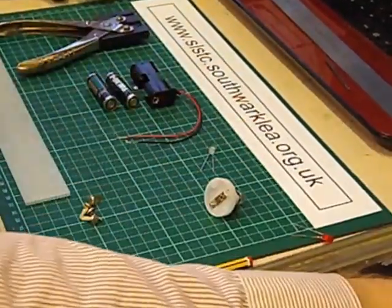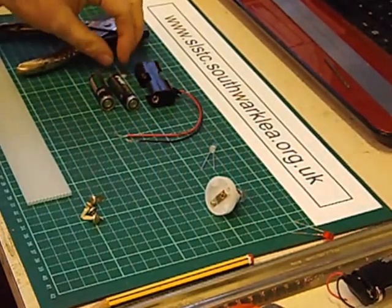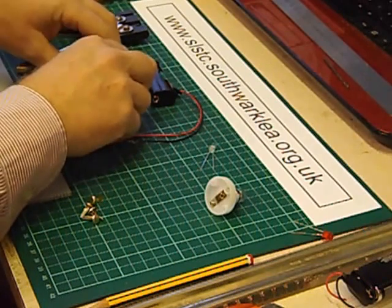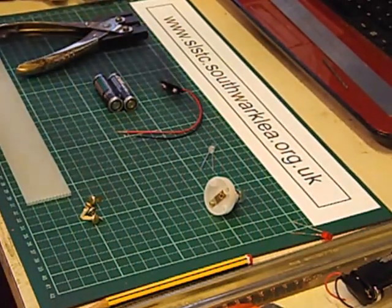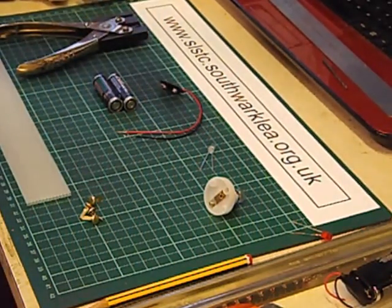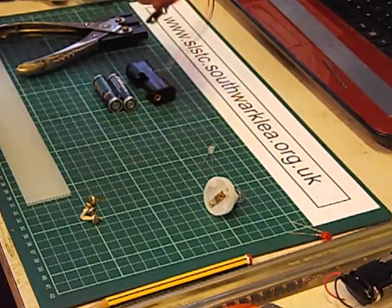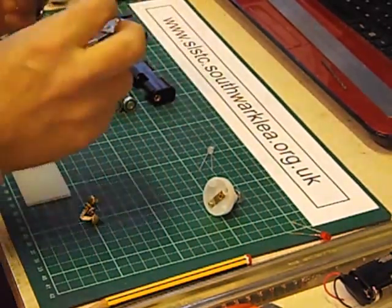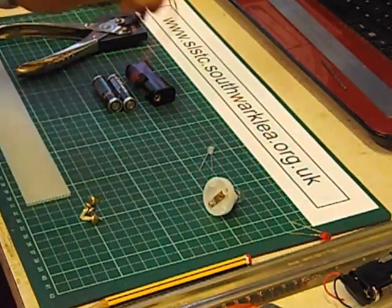You don't need a lot of parts for this. We've got two AA batteries, just ordinary AA batteries are fine. A twin AA battery holder. A battery holder connector. And I've stripped the ends here back to about a centimetre.